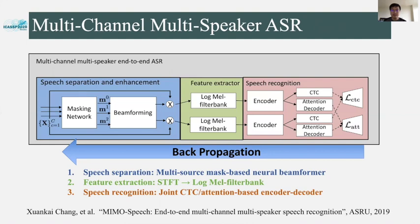The architecture of the multi-channel multi-speaker end-to-end ASR model: even though it is a single neural network, there are several submodules serving different roles. In the front end, it is a multi-source mask-based neural beamformer which performs speech separation and enhancement. Then, the feature extraction submodule converts the separated short-time Fourier transform to log-mel filter banks. Afterwards, the computed features are fed into the speech recognition submodule. We applied the transformer model with the self-attention and masking network, the encoder and the decoder as well.